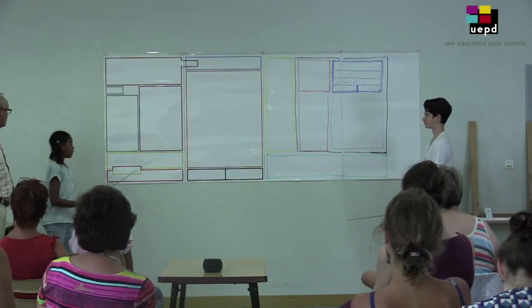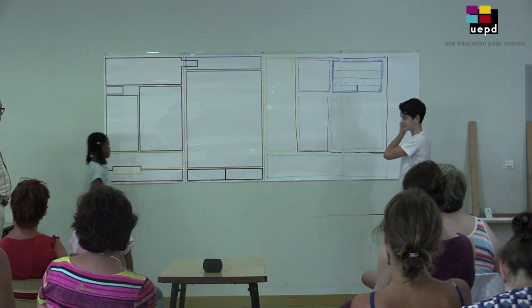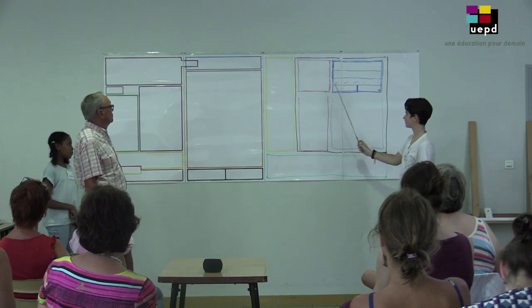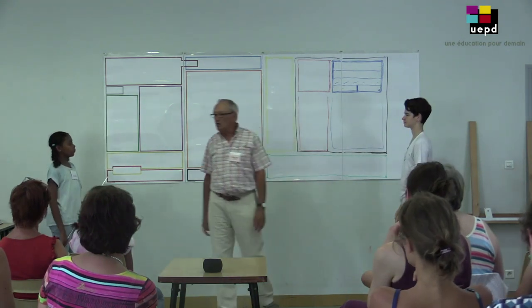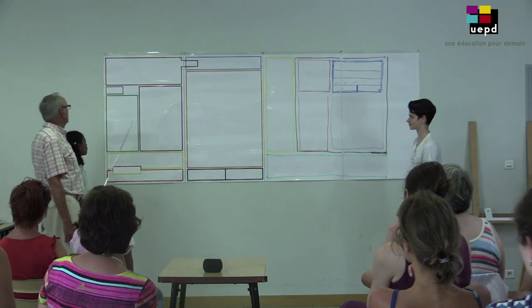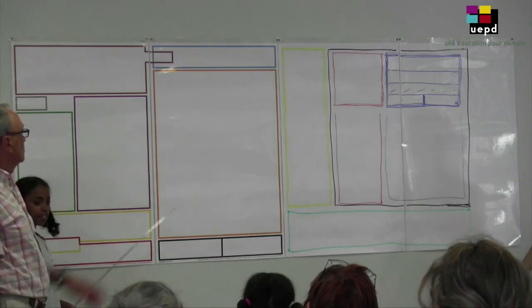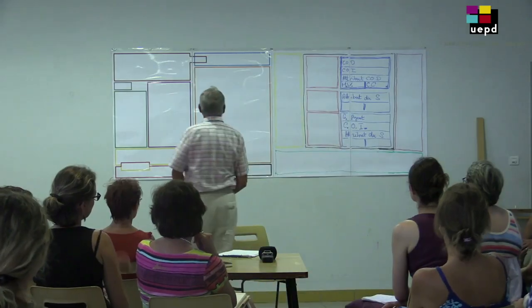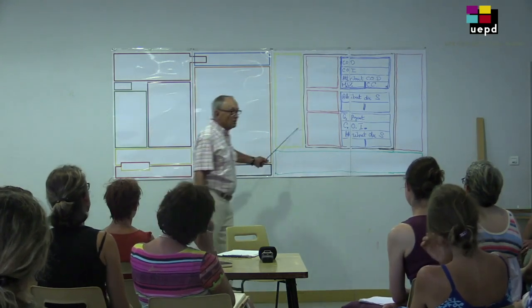Par exemple, ces mots que l'on place dans la case marron et que sont les pronoms, ils ont une fonction bien particulière : ils servent à remplacer des noms. Le facteur distribue le courrier. Pronominaliser le courrier. Est-ce que ça a du sens ? Le facteur distribue le courrier — ce sont deux modèles différents du français.